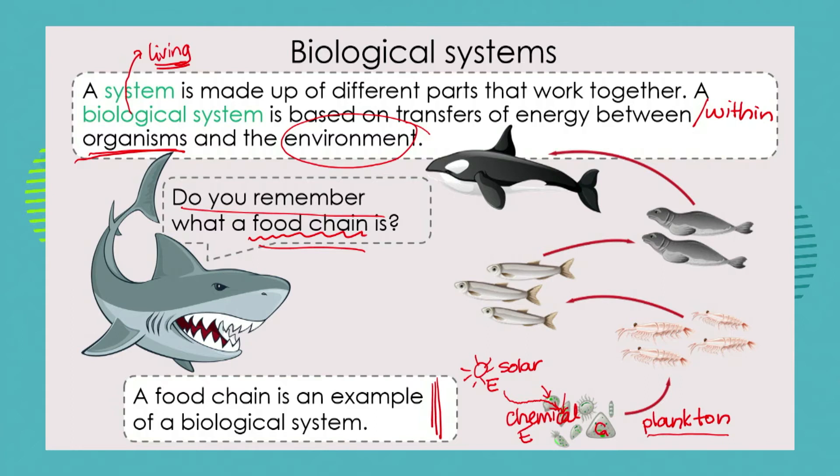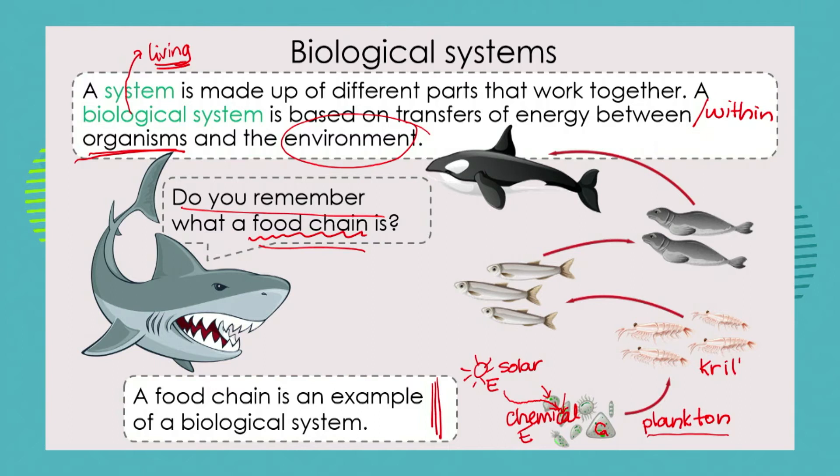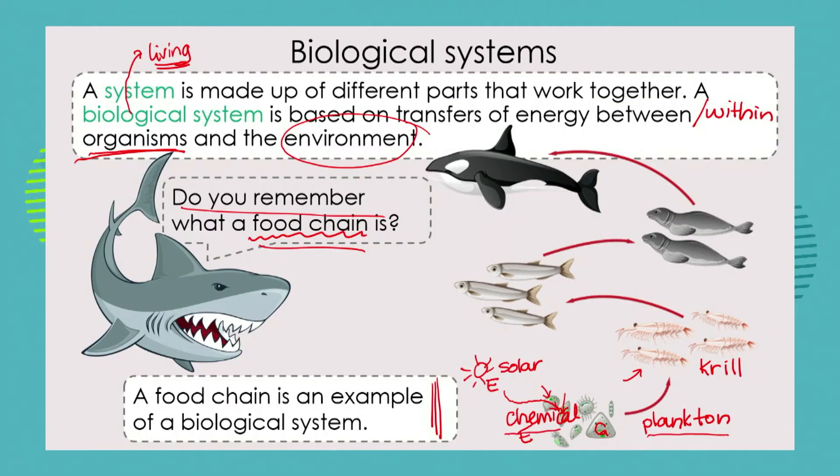Within each little plankton organism we see energy transfers happening, because some of them can move, and they all have to break down that chemical energy to allow them to reproduce and carry out all of their other living processes. As they float along, we find a crustacean called krill — tiny, shrimp-like organisms — and they take the chemical potential energy from the plankton they eat and transfer it into their own bodies.